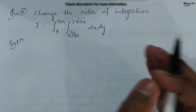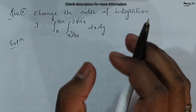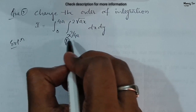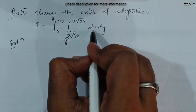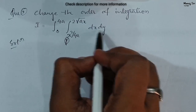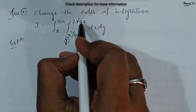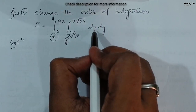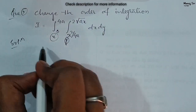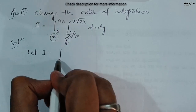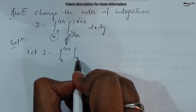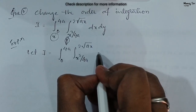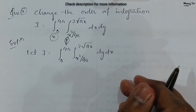Sometimes the order of integration given in the problem is incorrect as per the given set of limits, so first we will check that. Here you can see the limit contains x, so this is the limit of y — meaning first we should have dy. So the given order of integration is wrong. Since this is the limit of y and this is the limit of x, the order should be dy dx. We will correct that first: I equals integration 0 to 4a, integration x² / 4a to 2√(ax), dy dx.